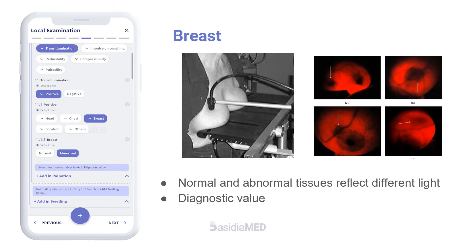Breast transillumination is based on the theory that normal and abnormal tissues reflect different light intensities. This principle is used to diagnose breast cancers.